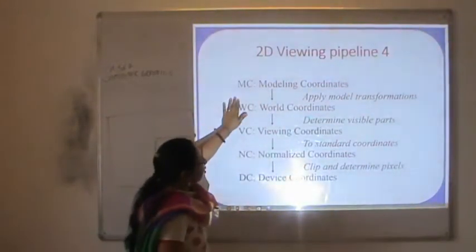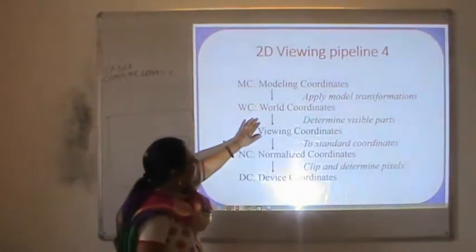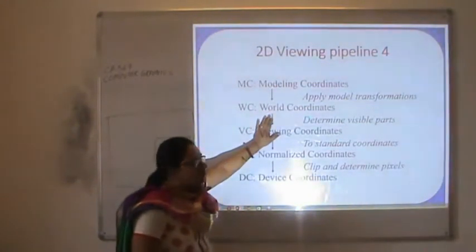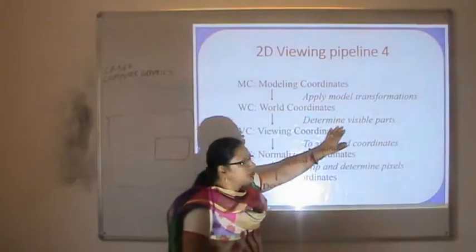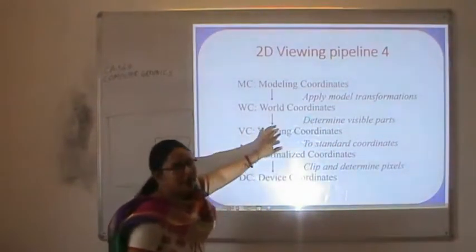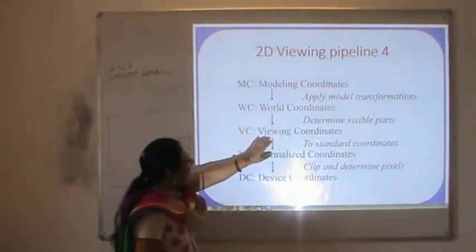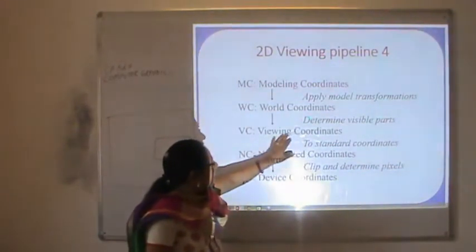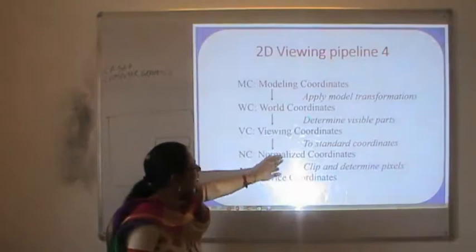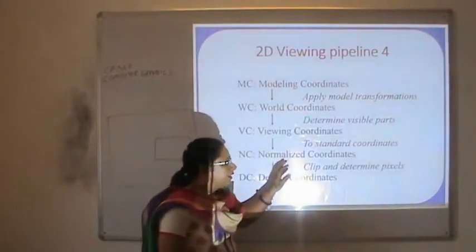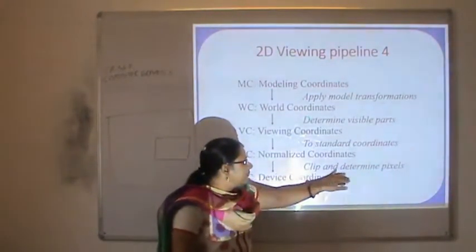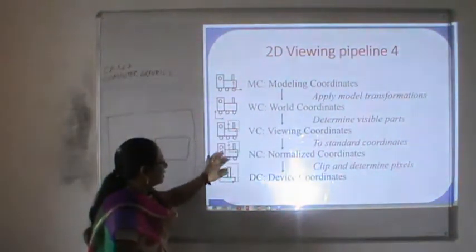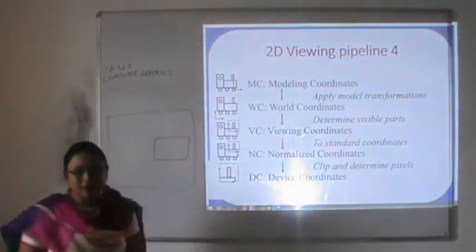First we have modeling coordinates. Applying modeling transformation on the modeling coordinates, we get the world coordinates. Then we determine the physical parts as in the previous example, and we get the viewing coordinates. We then apply standard normalization — mapping view coordinates to normalized coordinates — and then clip and determine the pixels. This sub-area of the picture will then be shown on the device coordinates.